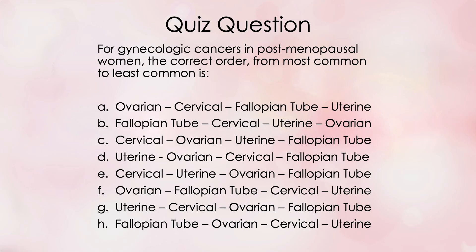For gynecologic cancers in post-menopausal women, the correct order from most common to least common is: A) ovarian, cervical, fallopian tube, uterine; B) fallopian tube, cervical, uterine, ovarian; C) cervical, ovarian, uterine, fallopian tube; D) uterine, ovarian, cervical, fallopian tube; E) cervical, uterine, ovarian, fallopian tube; or H) fallopian tube, ovarian, cervical, and uterine.